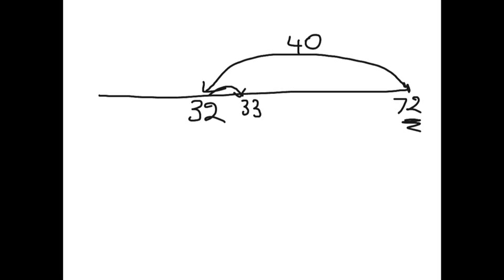I was going to write that as a number sentence. That would look like 72 take away 39 equals what? What am I going to be left with? So I go 72 take away 40 equals 32.